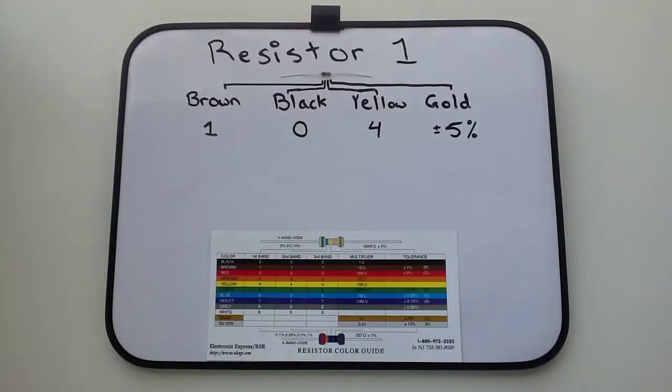The meaning behind these numbers is that the first band color is the first significant digit. The second band color is the second significant digit. The third band color is the number of zeros, and the fourth band color is the tolerance.